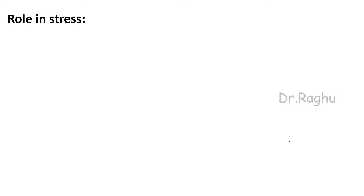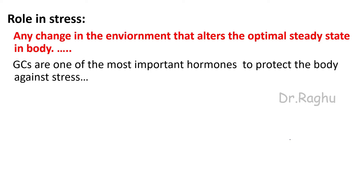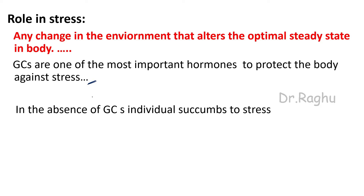Now, the role in stress: stress is any change in the environment that alters the optimal steady state in the body. Glucocorticoids are one of the most important hormones to protect the body against stress. Without glucocorticoids, when a person is under stress, the person will succumb to the stress. Cortisol levels increase whenever the body is in any kind of stress — whether physical or psychological — and all the actions described come in to combat the body against stress.